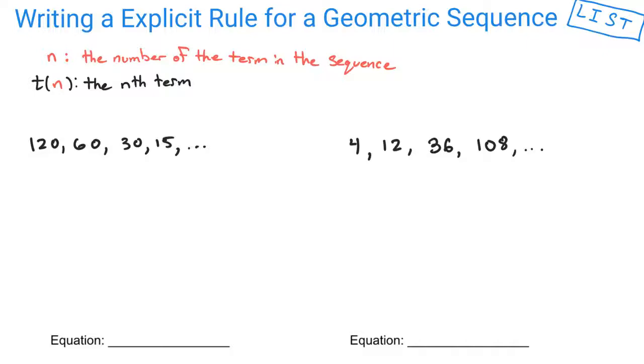Since we are going to be writing an explicit rule, we have to remember that n represents the number of the term in the sequence, and t of n is the nth term itself, so what is the actual value of it?